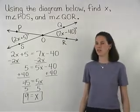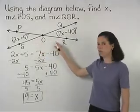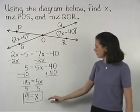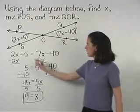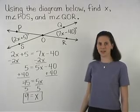To find the measures of angles POS and QOR, we simply plug a 9 back in for the x in either one of our angles.